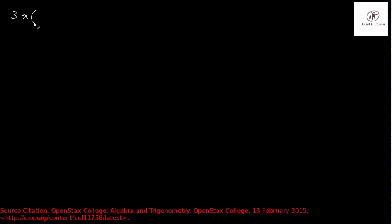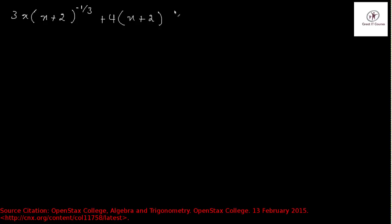Example number 8 in the book is: 3x into (x+2) raised to the power minus 1/3, plus 4 into (x+2) raised to the power 2/3.